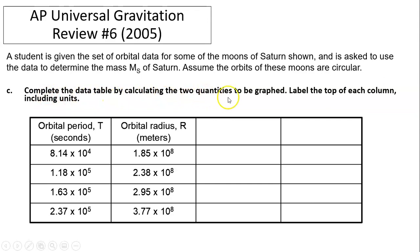Part d: Complete the data table by calculating the two quantities to be graphed. So as I said, I choose t² versus r³. So t² means you have to calculate t squared: 8.14 times 10⁴ squared. And r³ means you'll have to cube this number: 1.85 times 10⁸.